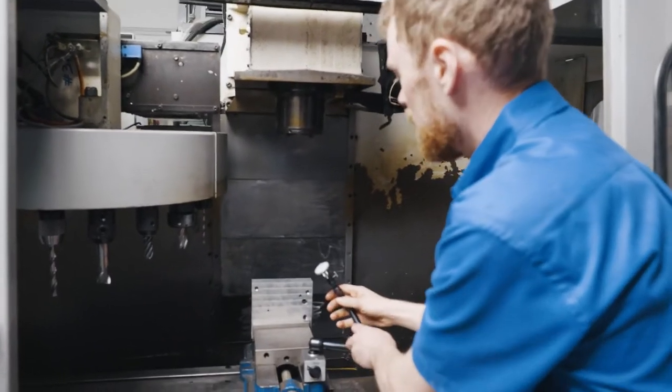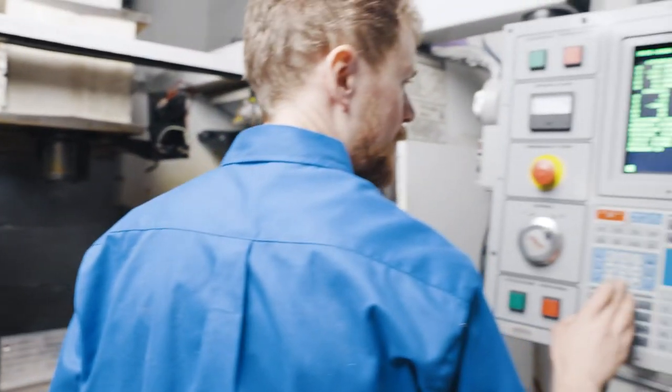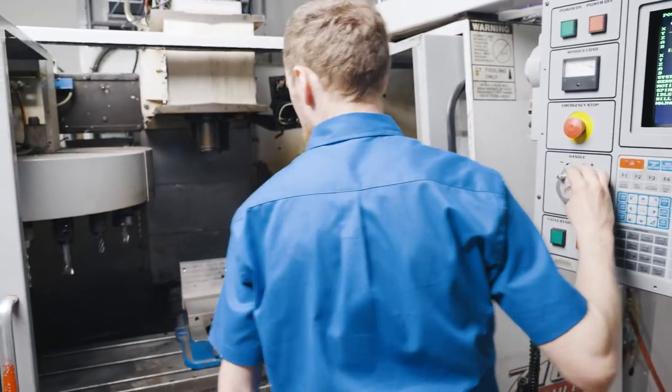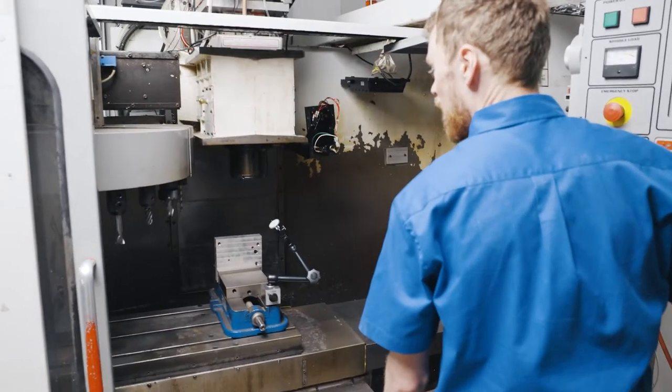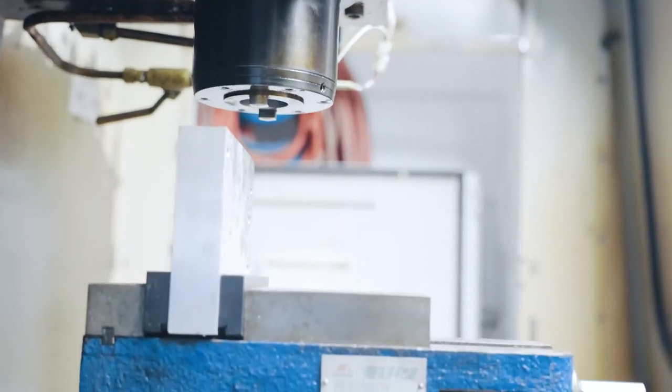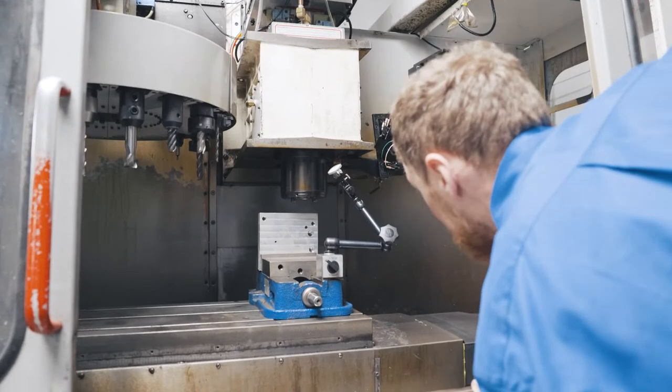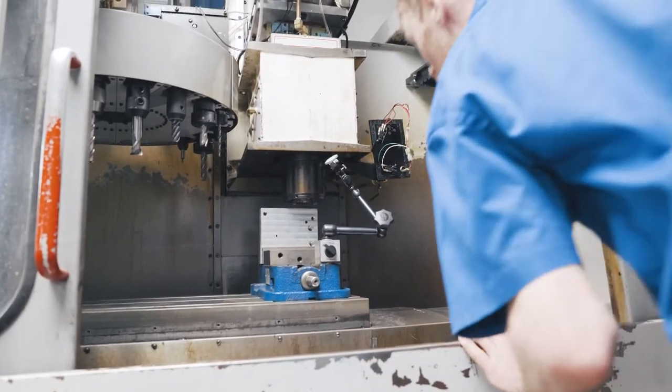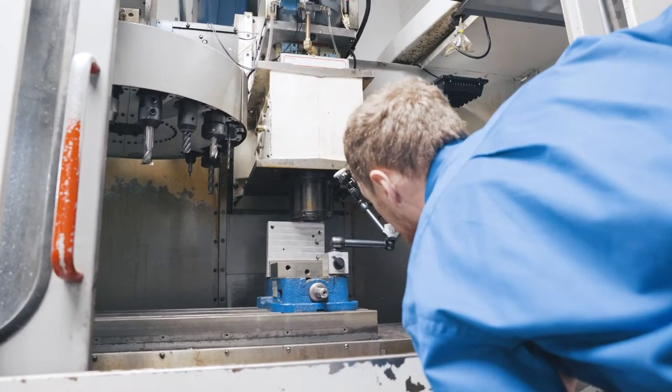So I'm going to recommend that we jog the head down and we're going to run it up against the block. This will help us confirm that it is set parallel. So I'm going to jog it all the way down just until the dogs blip into it.